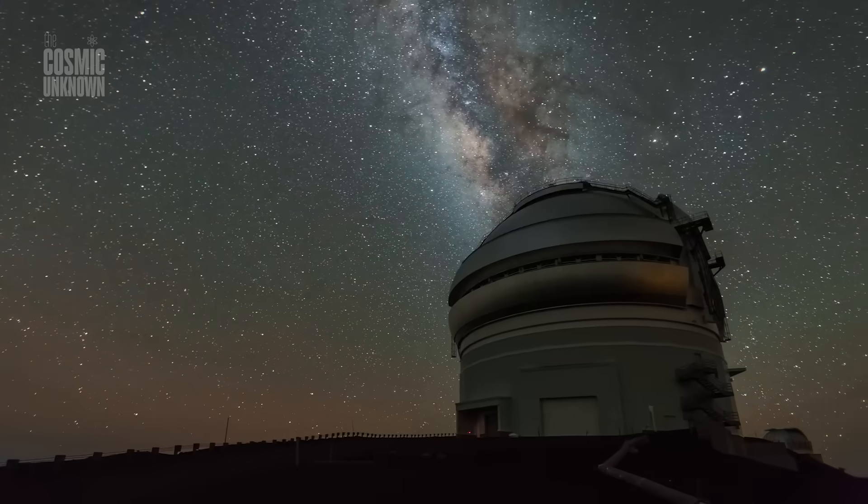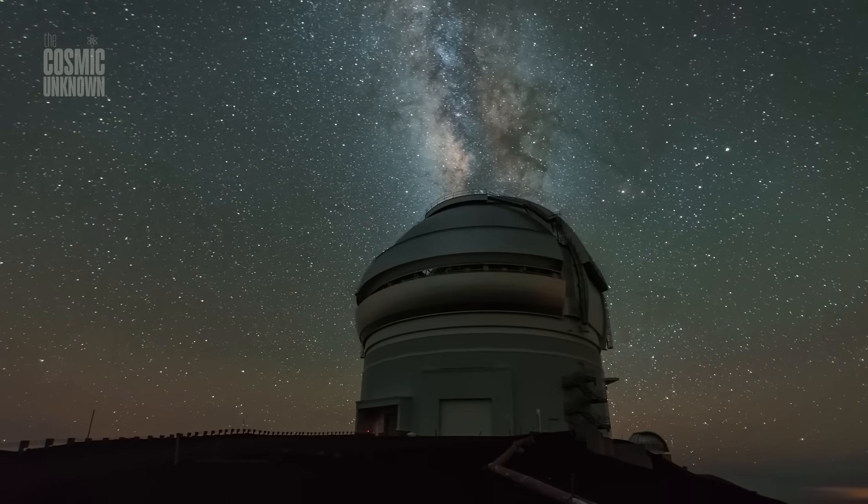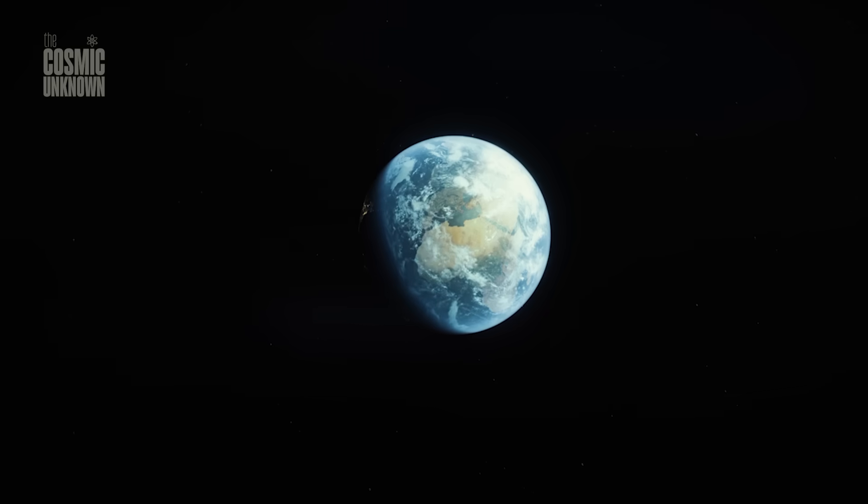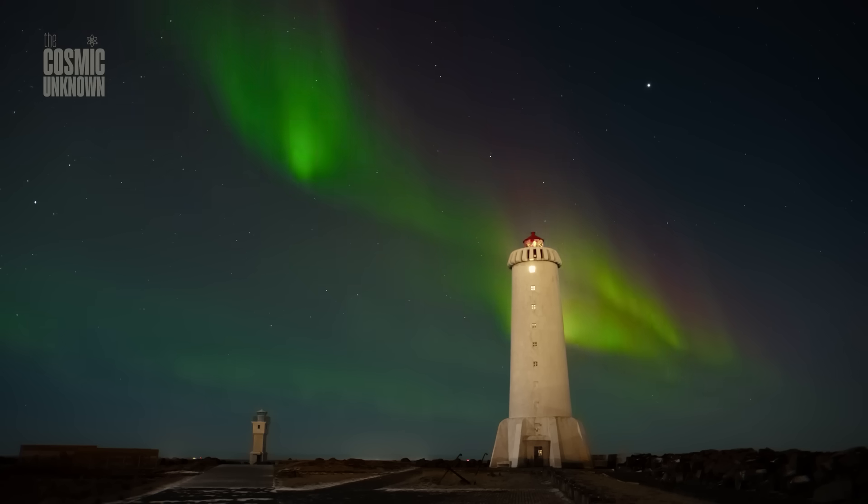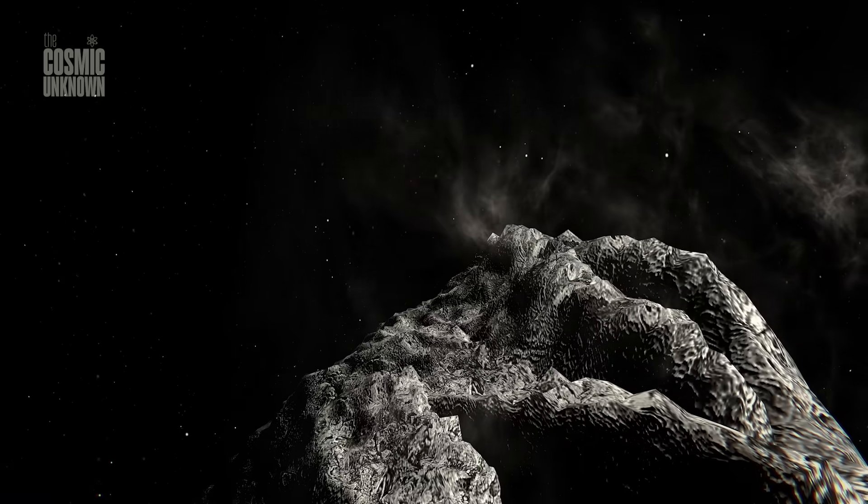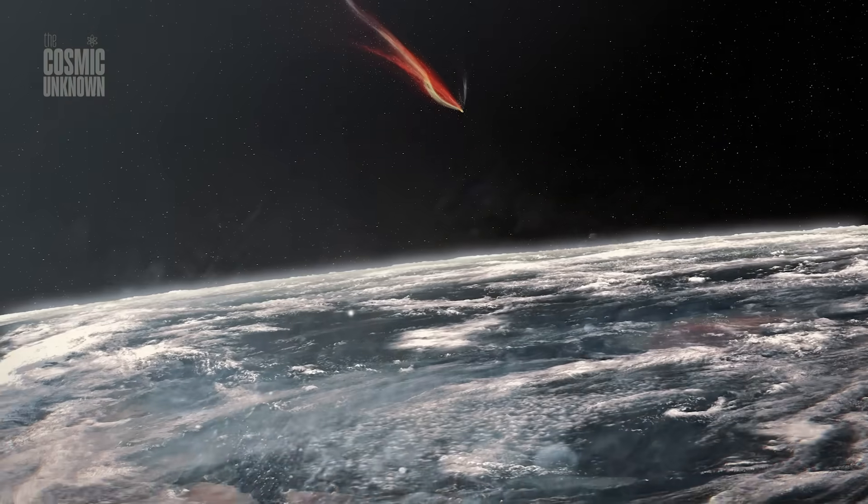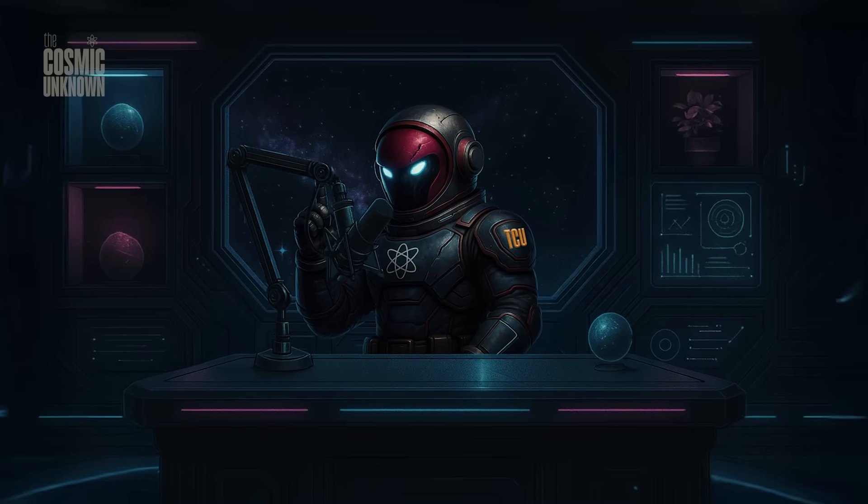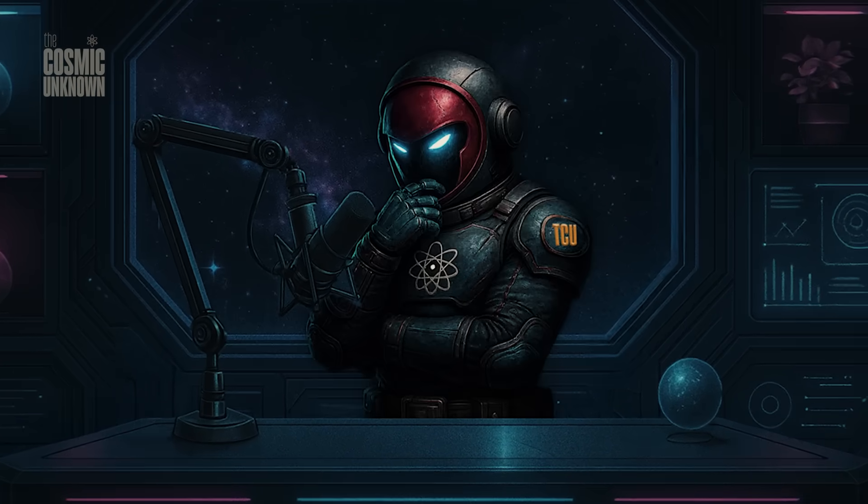Around late October, the comet will reach its peak activity, flaring up as it nears the sun. But Earth won't be watching. We'll be on the other side. The moment it lights up, we won't even have a clear view. It's frustrating. A visitor from another star enters our system, comes alive in the heat, and we miss it.